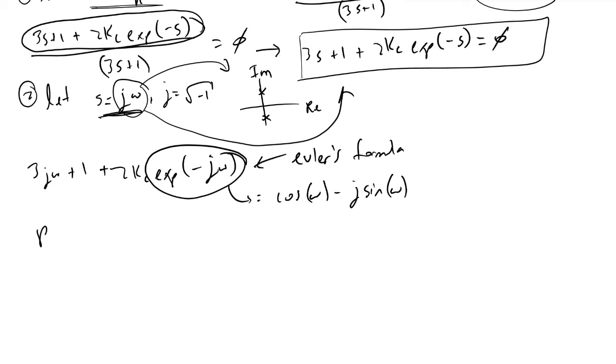If we look at only the real parts of this equation, we would get 2Kc cosine ω. If we look at the imaginary part, everything with a j in front of it, we would get 3ω minus...